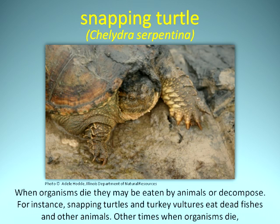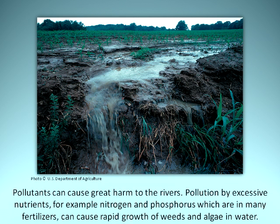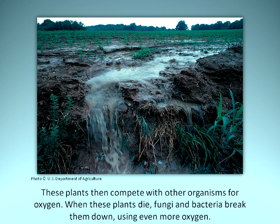When organisms die, they may be eaten by animals or decompose. For instance, snapping turtles and turkey vultures eat dead fishes and other animals. Other times when organisms die, bacteria, insects, and fungi may break them down into materials that can be recycled for use by other organisms. This decomposition is a process that also takes oxygen from the environment. Pollutants can cause great harm to the rivers. Pollution by excessive nutrients — for example, nitrogen and phosphorus, which are in many fertilizers — can cause rapid growth of weeds and algae in water. These plants then compete with other organisms for oxygen. When these plants die, fungi and bacteria break them down using even more oxygen.